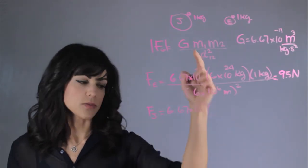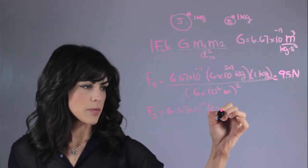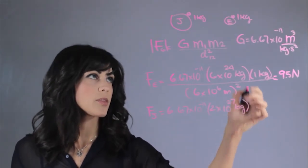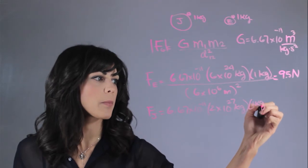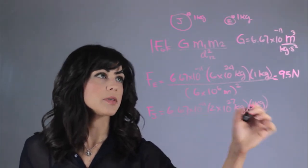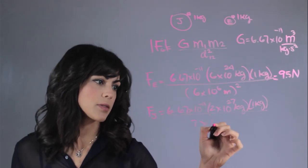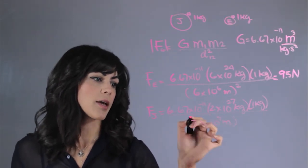But now we plug in the mass of Jupiter, which is 2 times 10 to the 27th kilograms. The rock is still the same rock, so it's 1 kilogram. And the distance between them is the radius of Jupiter, which is 7 times 10 to the 7 meters, and we square this.